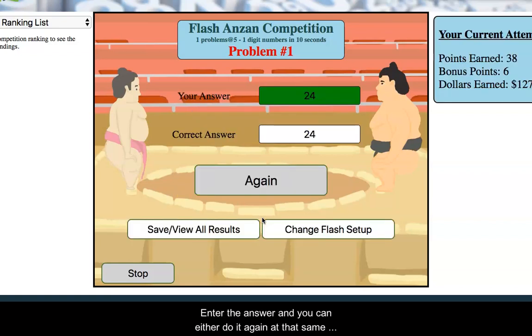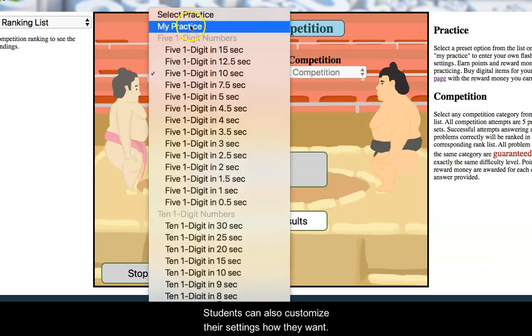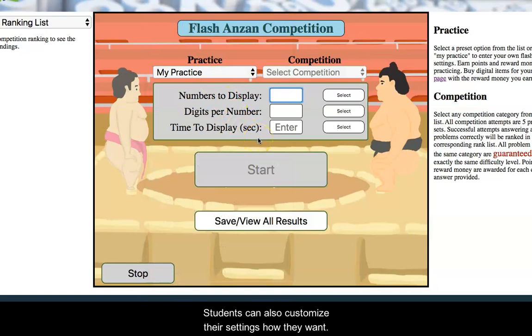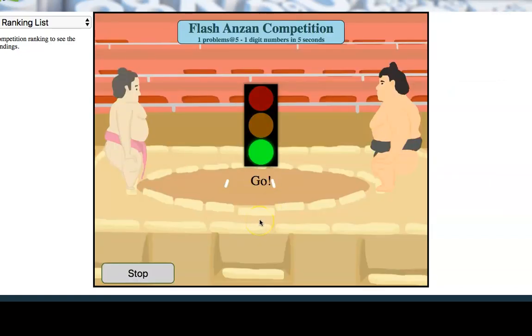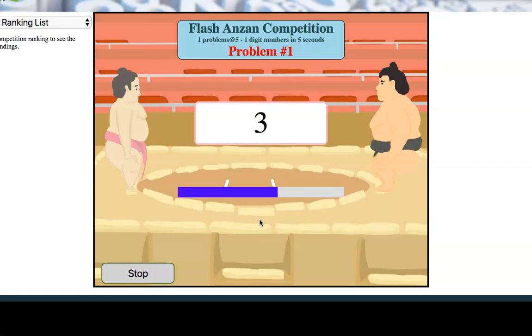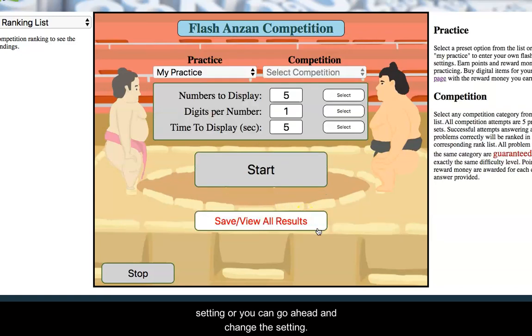And this will present me five one-digit numbers in four seconds. And then you just enter the answer and you can either do it again at that same setting or you can change your flash setting. I also wanted to point out that we allow students to customize to whatever settings they want, like they can do just by typing in the parameters that they want and then click start. And it'll function exactly the same way as before. And then you just enter the answer and you can continue working with that setting or you can go ahead and change that setting.